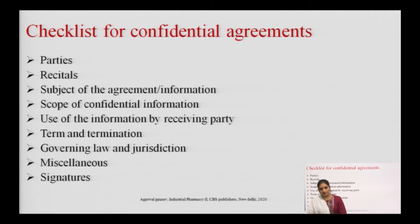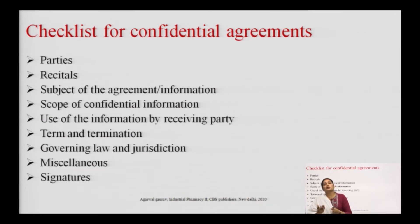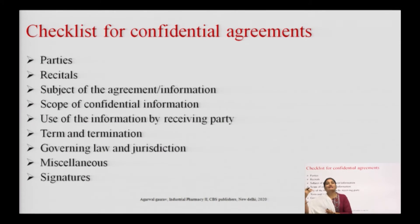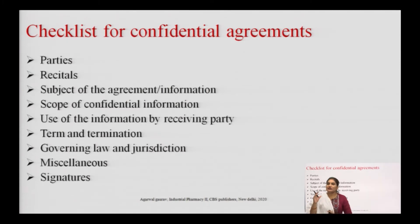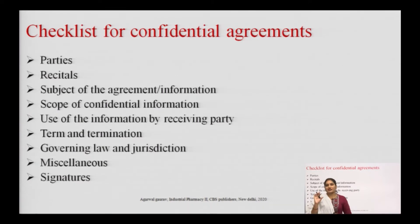Governing law and jurisdiction: to which government law and jurisdiction this confidential agreement corresponds — for example, a specific Act or resolution — should be described in the confidential agreement. Miscellaneous: any other information needed for the agreement should also be included. Last, signature: the most important element — signatures from both parties — must be present in the confidentiality agreement.